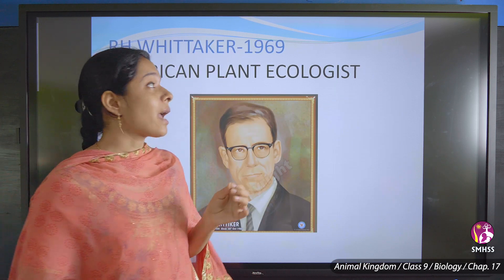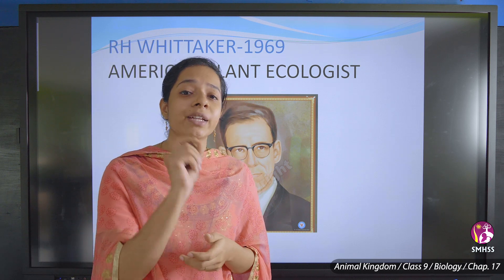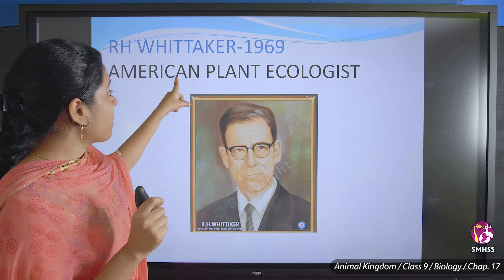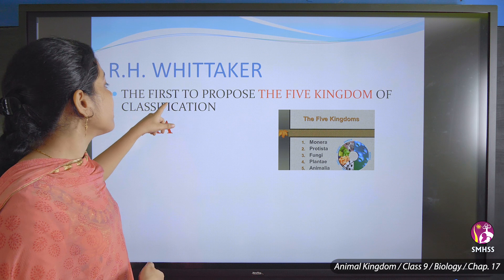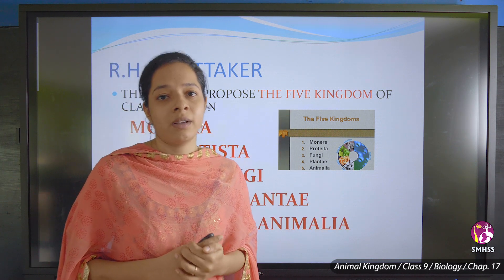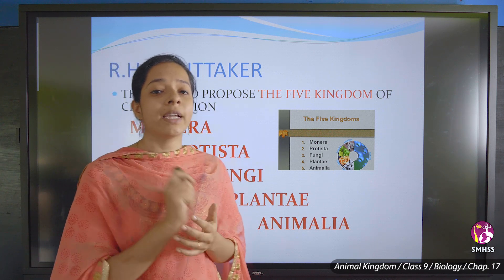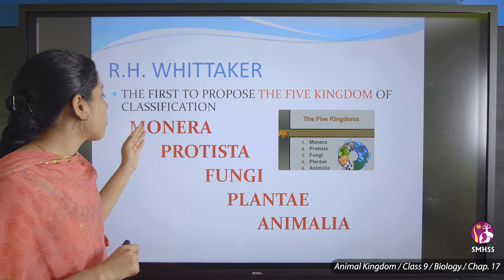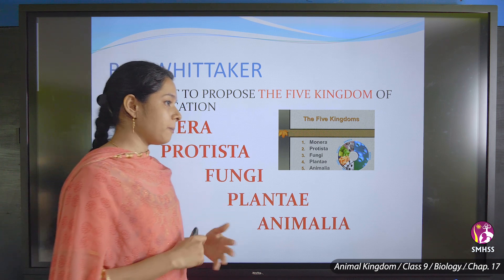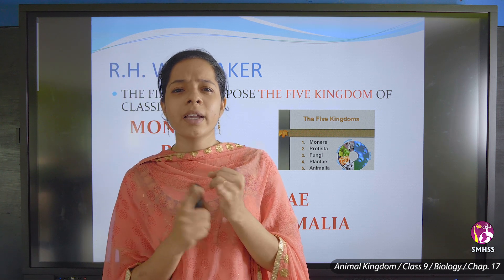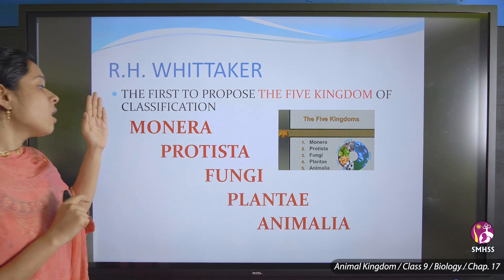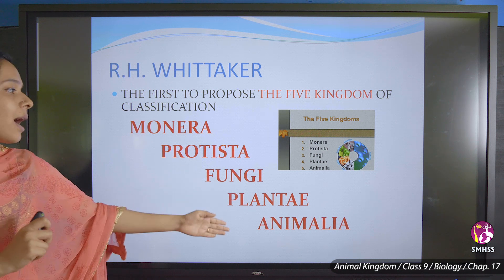In the year 1969, R.H. Whittaker, an American plant ecologist, proposed the first five-kingdom classification. He classified all species into five kingdoms: Monera, Protista, Fungi, Plantae, and Animalia.